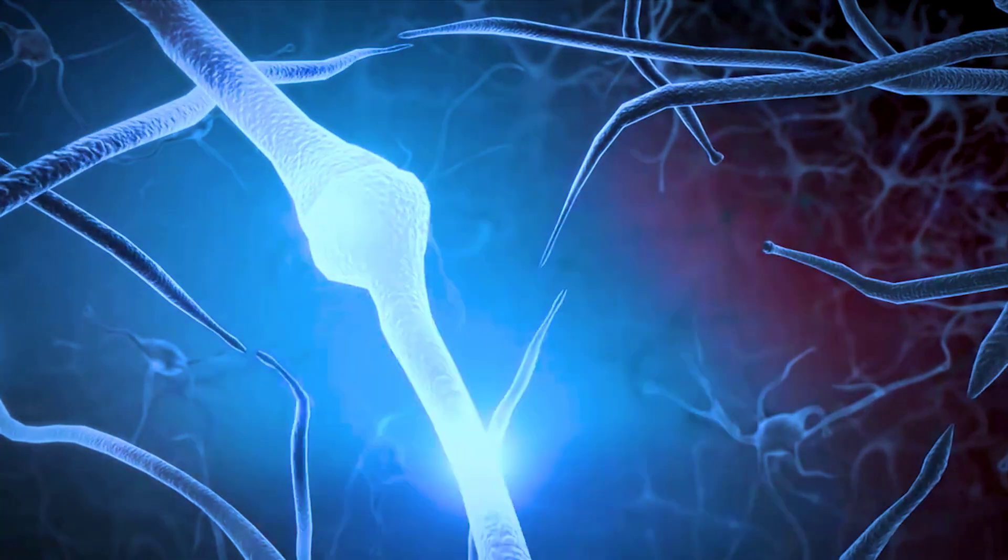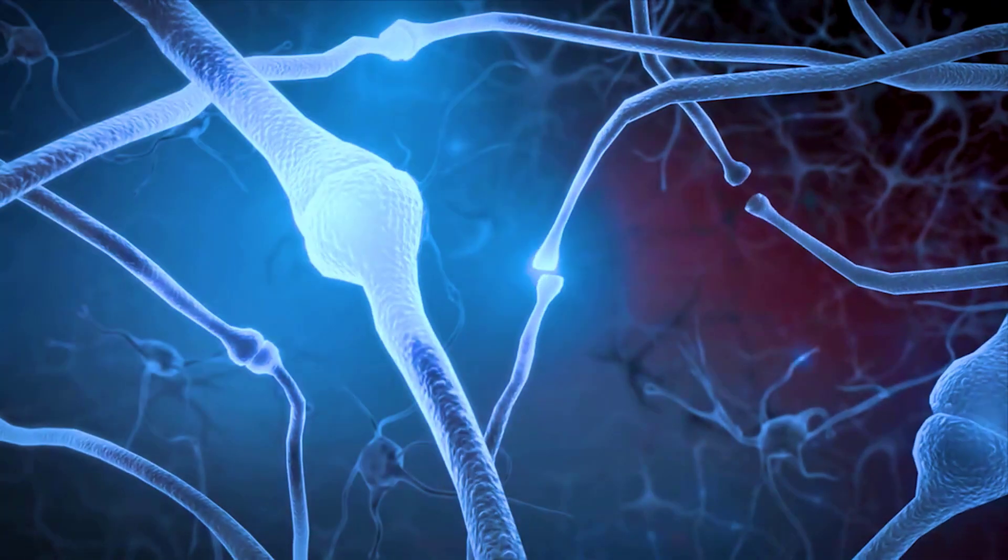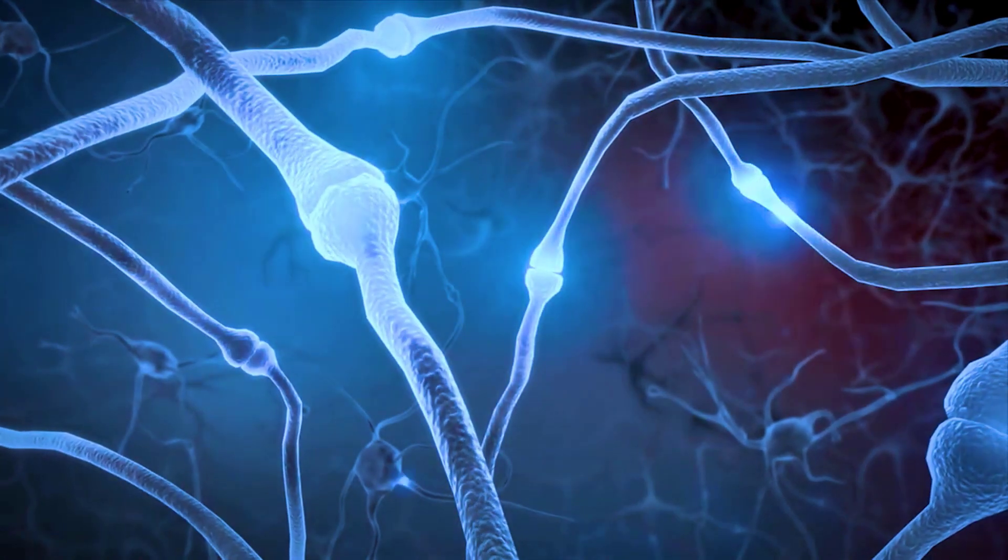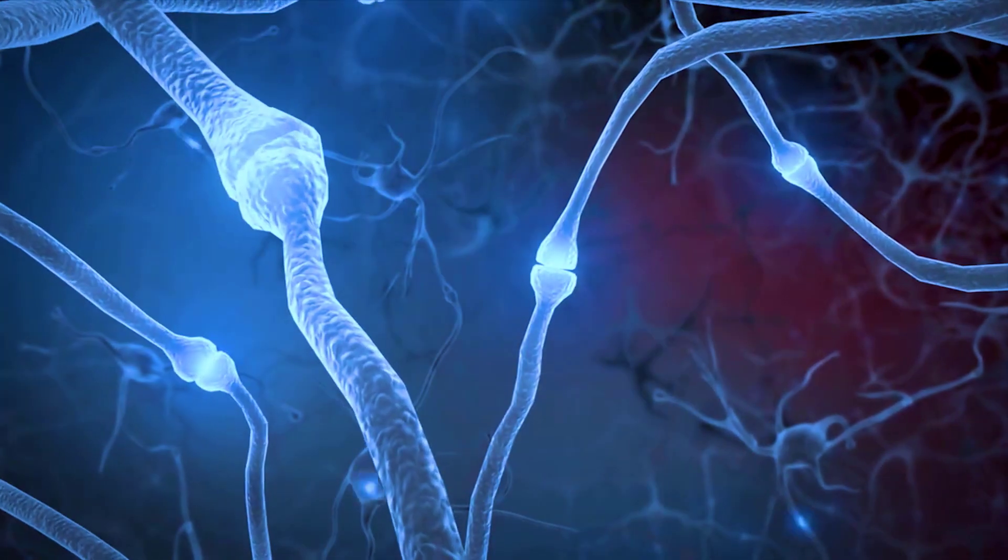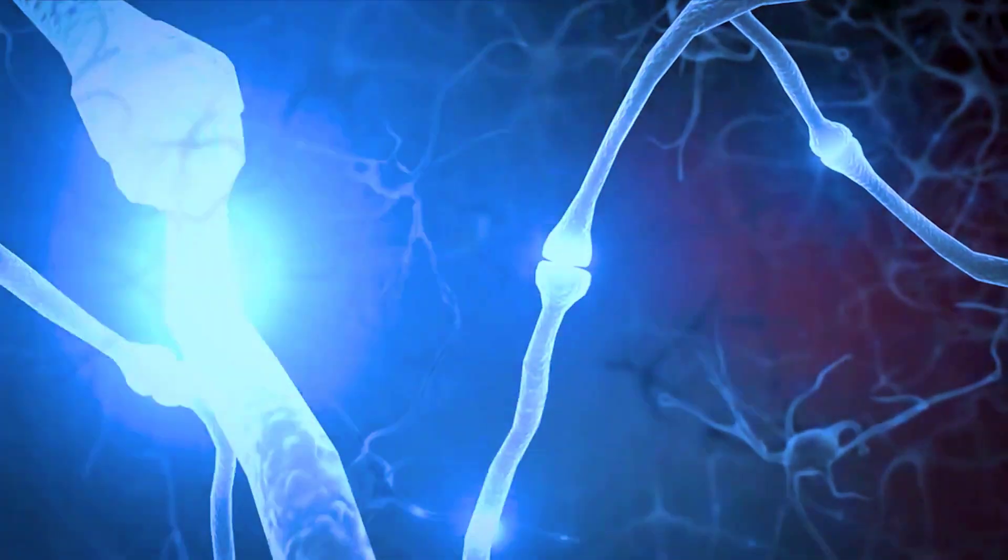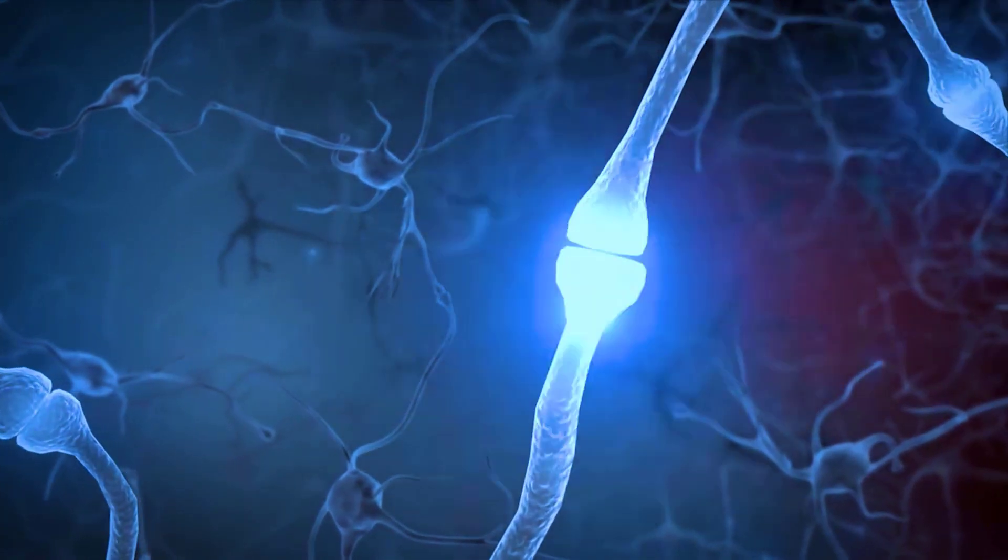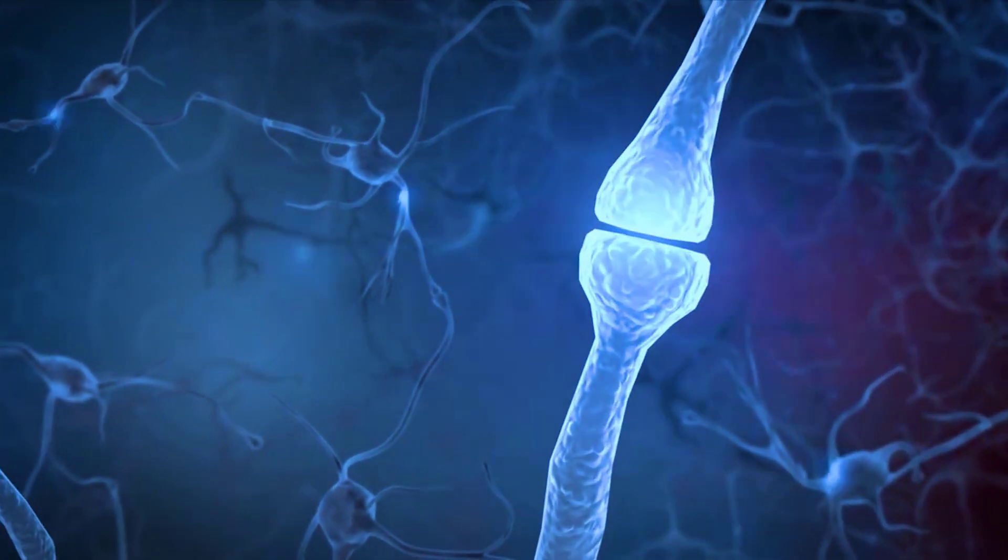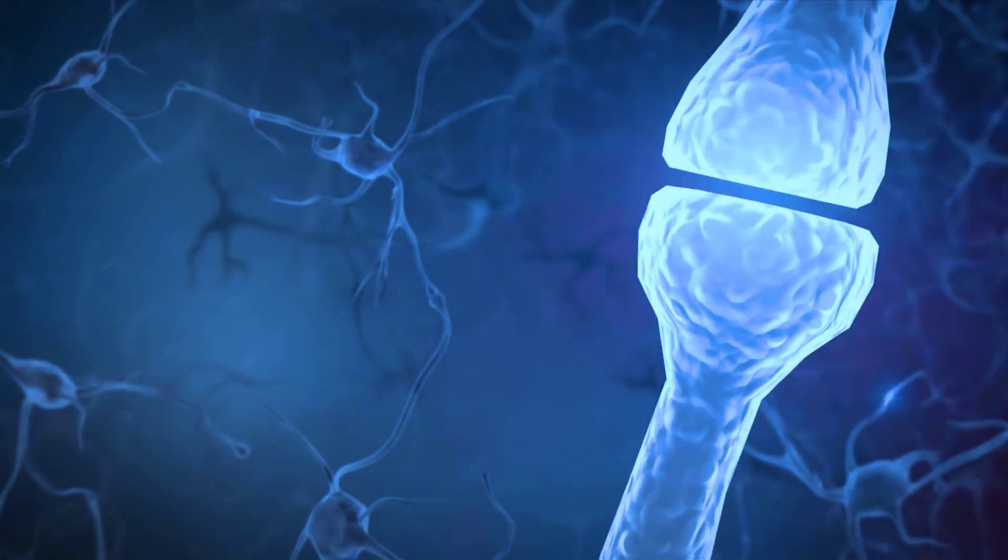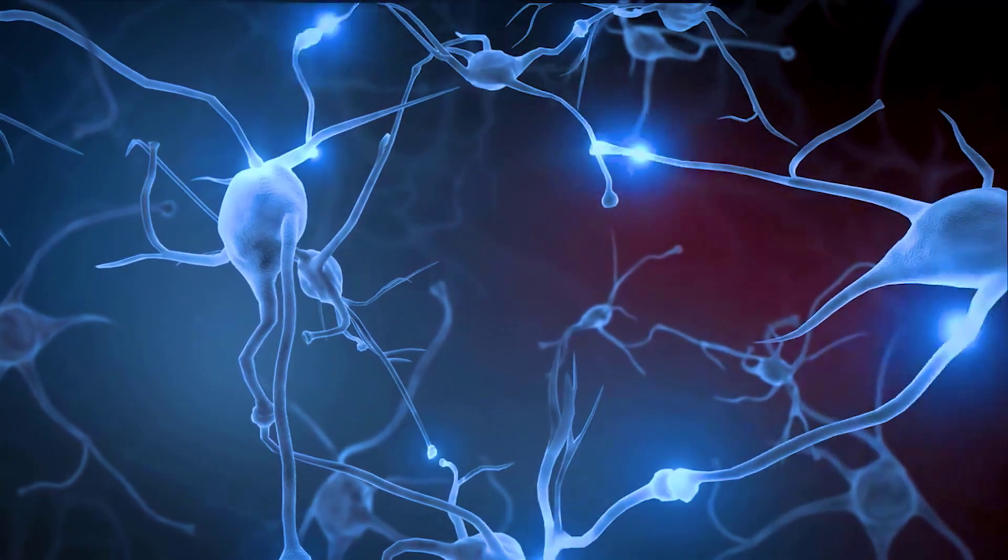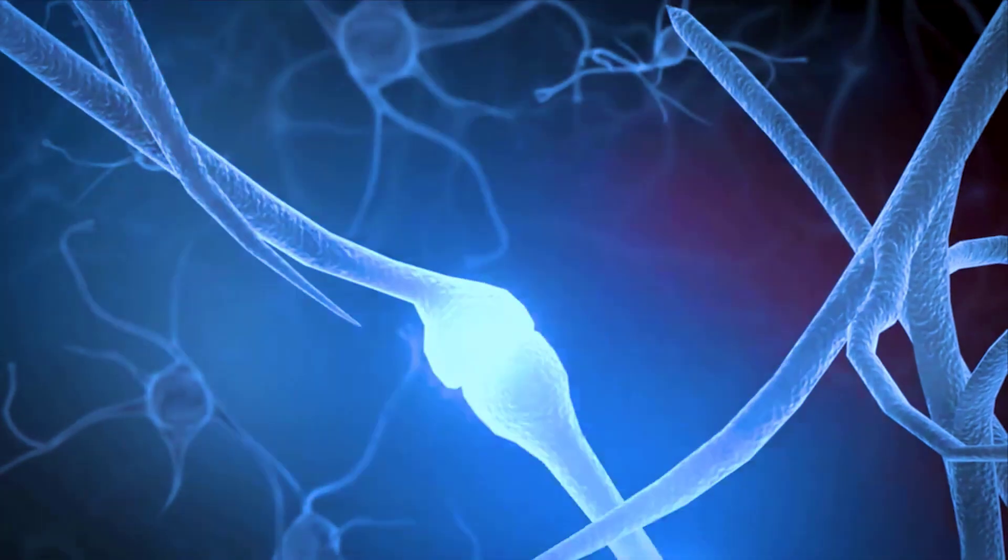It's those connections that make up the programming of your brain. The strength of those connections can change as your brain learns, controlling how much that particular connection contributes to a neuron's decision to fire or not. Connections can be broken and new connections formed. Together, these connections between neurons and the strength of those connections make up your own neural network.